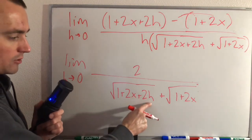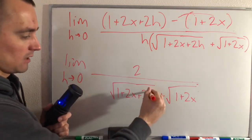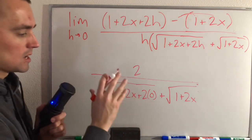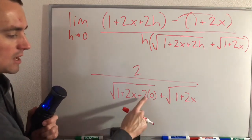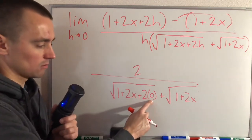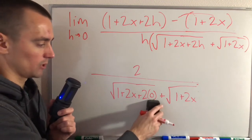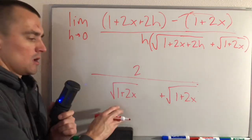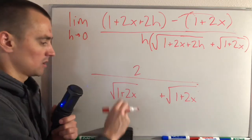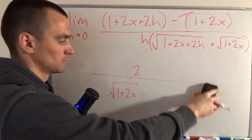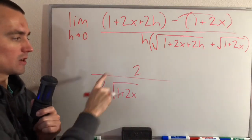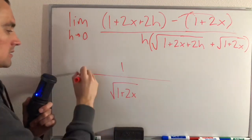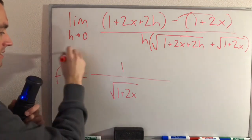Now to evaluate this limit, we can just plug in zero for h. The only h remaining is in the denominator, and plugging in zero gives us 1 plus 2x plus zero under each square root, which simplifies to just the square root of 1 plus 2x plus the square root of 1 plus 2x. Since these are the same term, we add them to get 2 times the square root of 1 plus 2x. The 2 on the numerator and the 2 on the denominator cancel, leaving us with 1 over the square root of 1 plus 2x, which is our final answer for f prime of x.